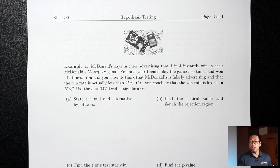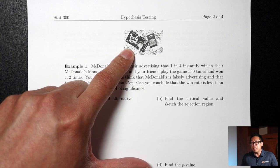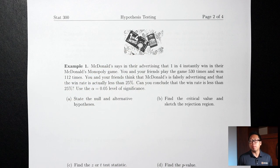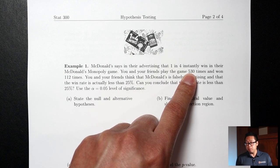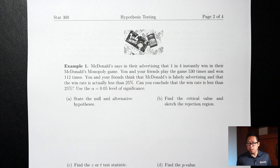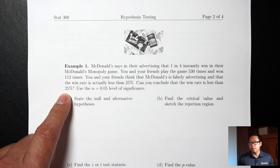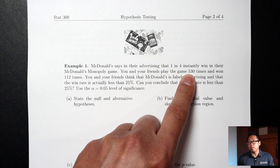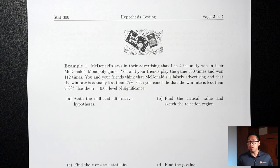This is the same situation from the introduction. McDonald's has this Monopoly game with millions and millions of game pieces, and they're saying 25% of those pieces are winners. The question is, from our sample of just 530 game pieces, do we have enough evidence to conclude that McDonald's is lying — that if we looked at all those millions of game pieces, the win rate would actually be less than 25%? From our small sample of 530, can we say something about the entire population?